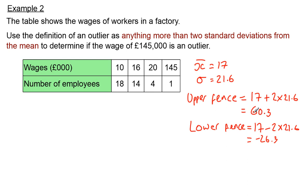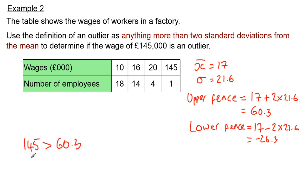To answer this question we only actually needed the upper fence. The upper fence is 60.3. Since 145 is greater than 60.3, we can conclude that the wage of £145,000 is an outlier.